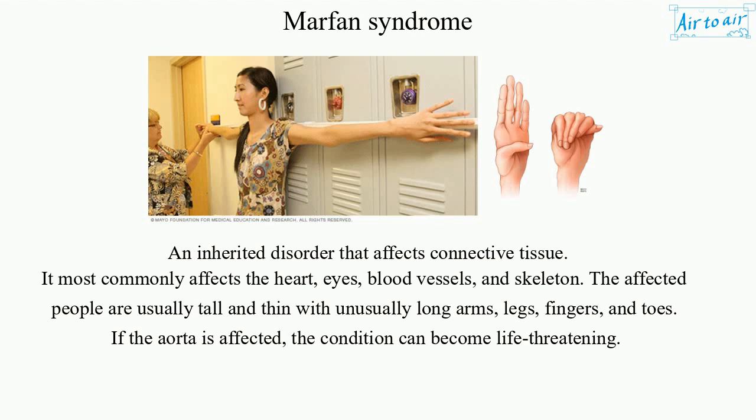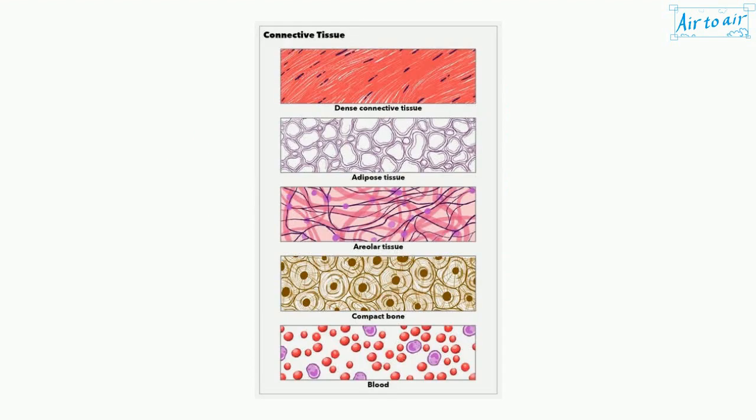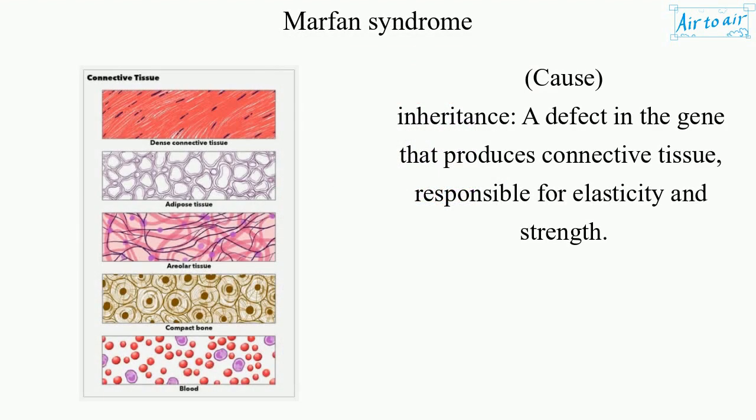If the aorta is affected, the condition can become life-threatening. Cause and inheritance: a defect in the gene that produces connective tissue, responsible for elasticity and strength.